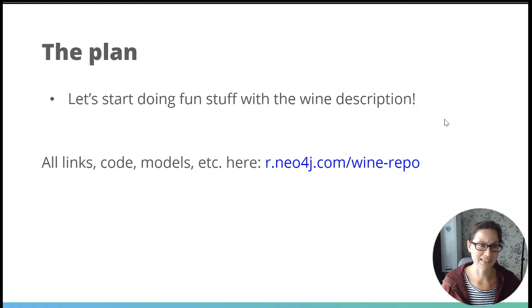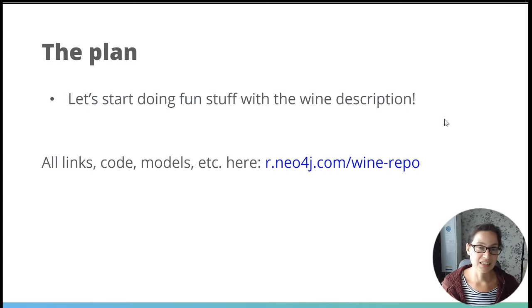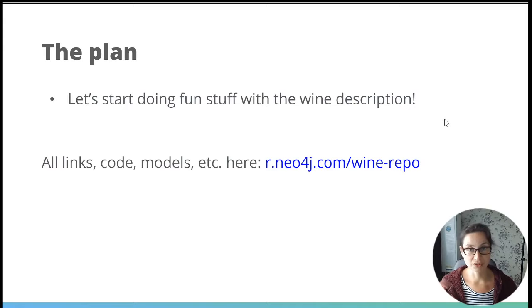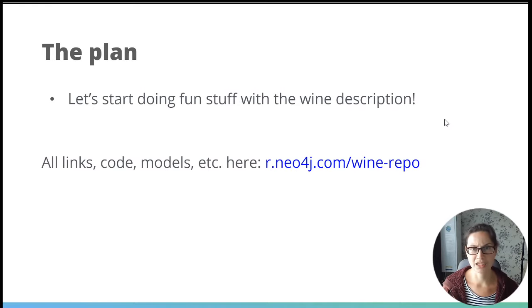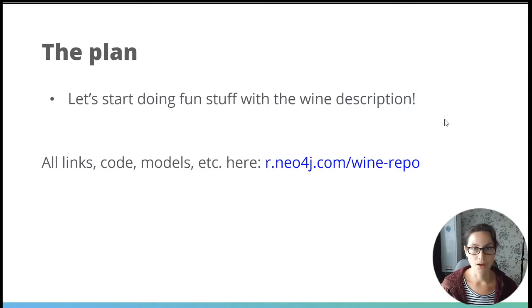This description data has not been imported yet. What we're going to do today is get that data in, change the data model again - just iterating and adding more data. We're going to load that data and then explore the description data to look at what approaches we can use to turn it into something useful. As always, you can find the link there which contains everything - I write up what we covered each week, give you the code samples, and you can download data from there. Questions are only being taken on Twitch chat.